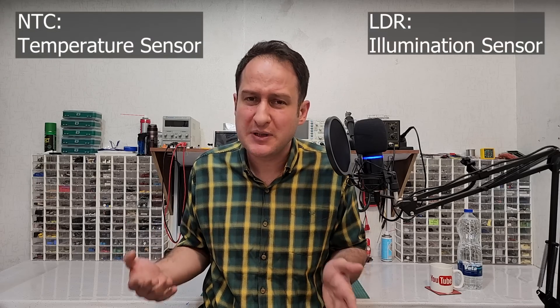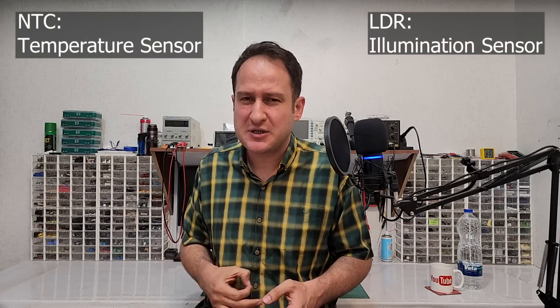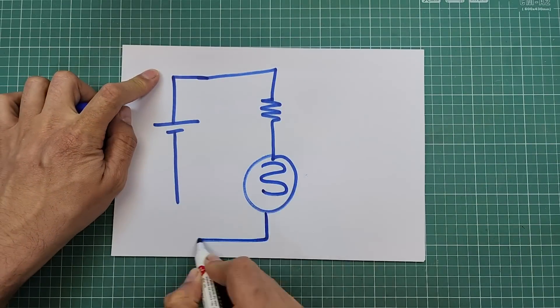But in some cases, we just need the regulator to provide a steady voltage and there is no need for a high amount of current. Let me explain. Suppose that you need to use a resistive sensor like NTC or LDR in a portable device. Now answer my question: what challenges are we going to face?